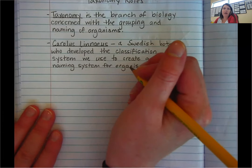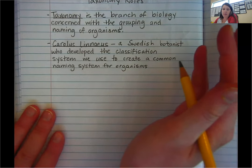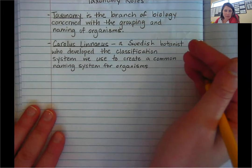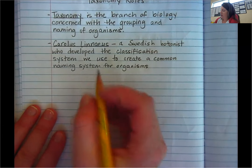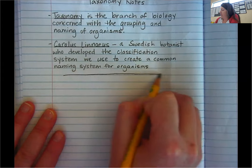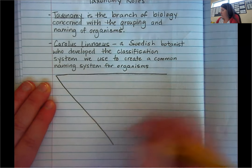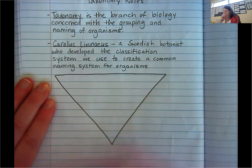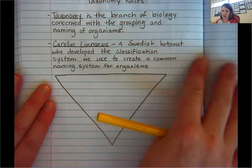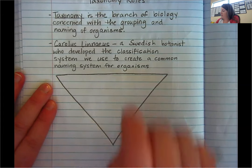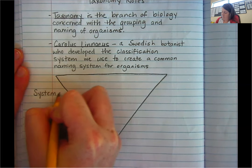Essentially, if he was going to classify things, he thought he should start with very general concepts and then work his way to more specific details about each organism. The way I like to draw it is kind of like an upside-down triangle. Each layer is called a taxon — taxonomy, see what we did there? And this is the system of classification that he created.